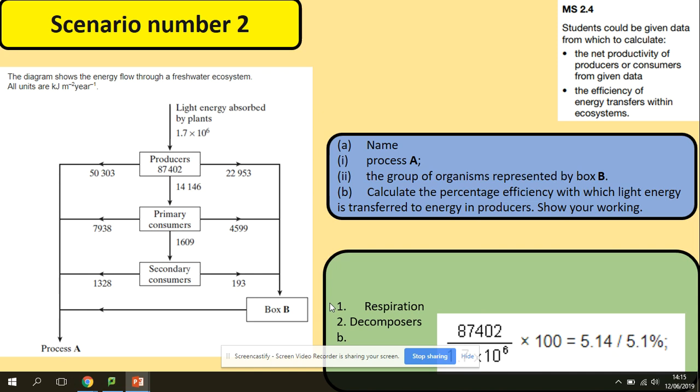Calculate the percentage, how we can do it. We're starting with what we've got in the producers, so that was 27,402, divided by the total light energy which was absorbed, multiplied by 100 because they want the percentage, which will give you 5.14%. So remember, efficiency is what is produced by producers divided by the total of the energy that was absorbed.